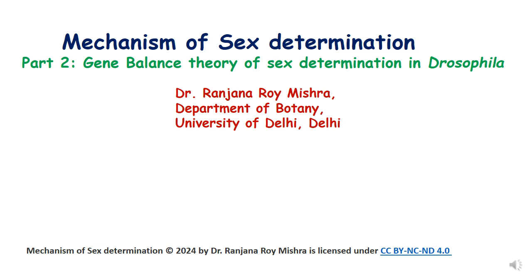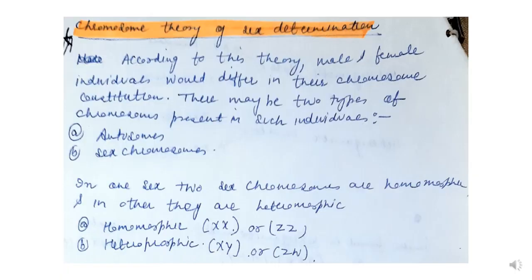Hello dear students. In this lecture let us discuss the gene balance theory of sex determination in Drosophila. This is Part 2 of the lecture series on mechanism of sex determination. In Part 1 we discussed dosage compensation and Lyon's hypothesis. In the first part of this lecture we discussed the chromosome theory of sex determination.